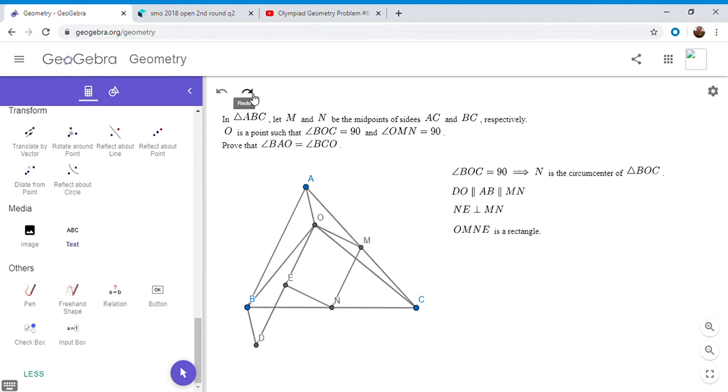All right, and so now that means that OE is equal to MN, and MN is half AB, since MN is mid-segment in triangle ABC, and AB is OD, because ABDO is a parallelogram. So I'm going to write this out. OE is MN, is half AB, is half OD.